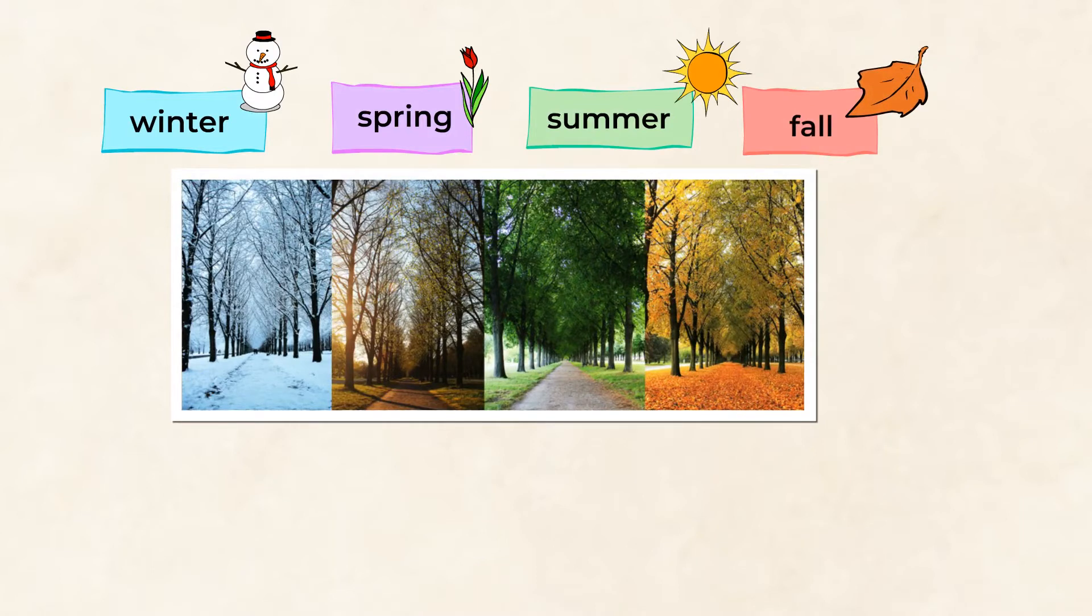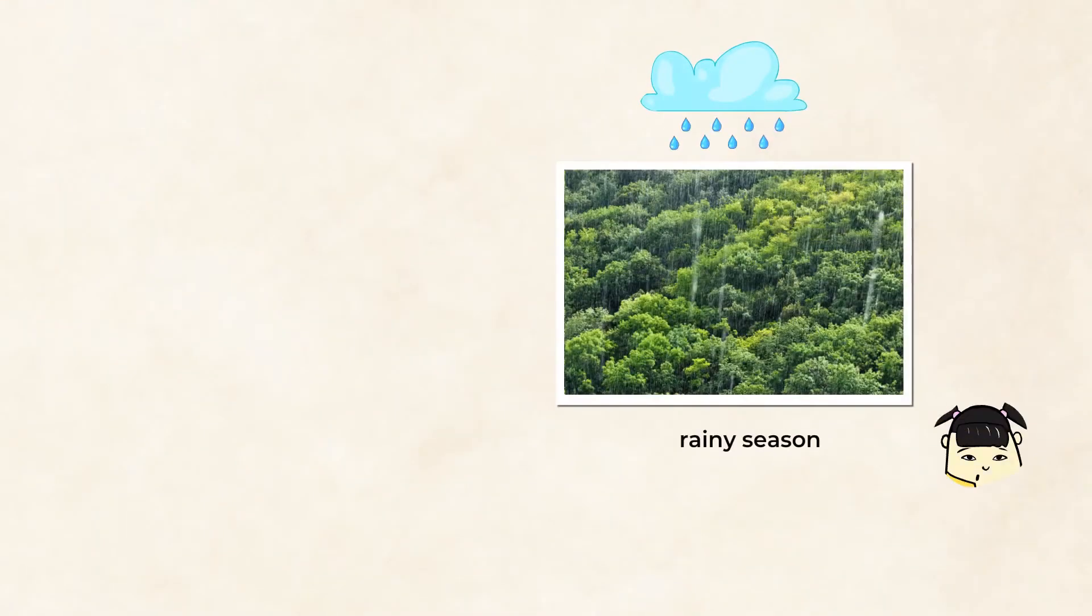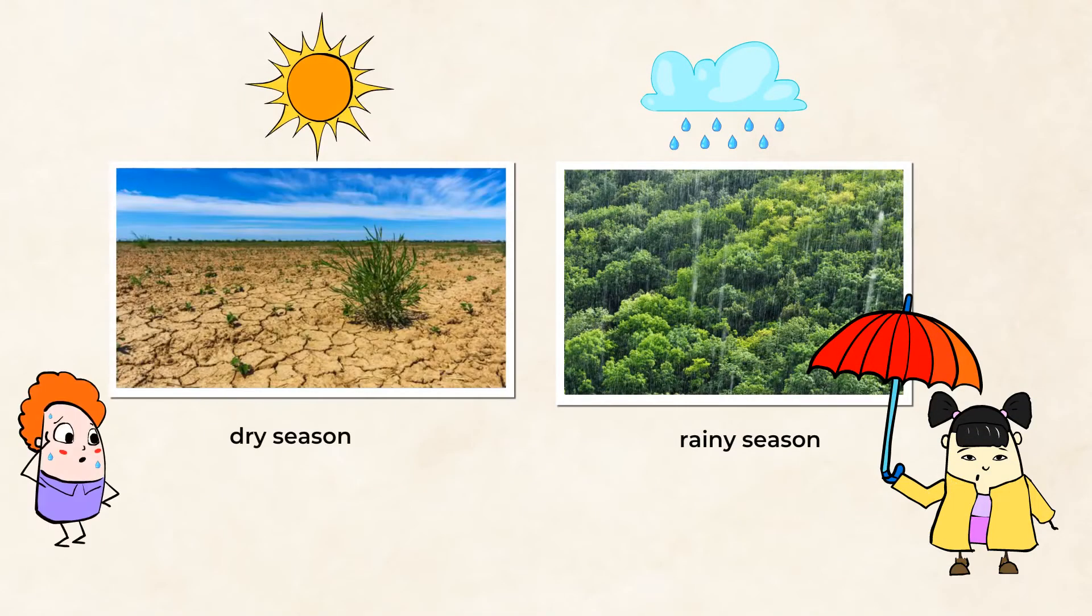And each of these seasons bring different kinds of weather. Many places experience cool weather in the fall and winter, and then warmer weather in the spring and summer. By the time Earth is back around the sun, it's time to start the pattern of seasons all over again. Some countries measure seasons differently. They have a rainy season and a dry season. Only two.